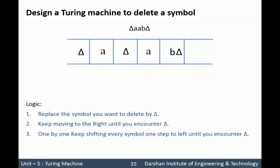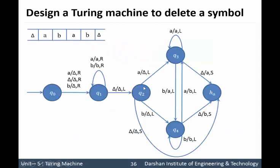So we shift delta instead of B, shift B instead of A, and shift A instead of delta. We shift the entire string one step to the left cell. Finally our string will be A, A, B, and we have successfully removed B from the string.